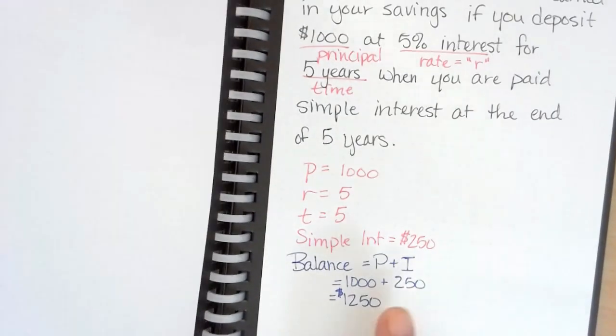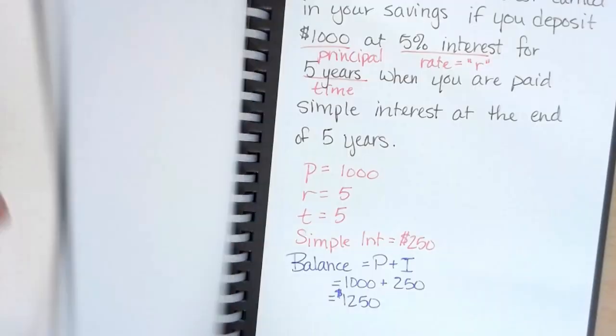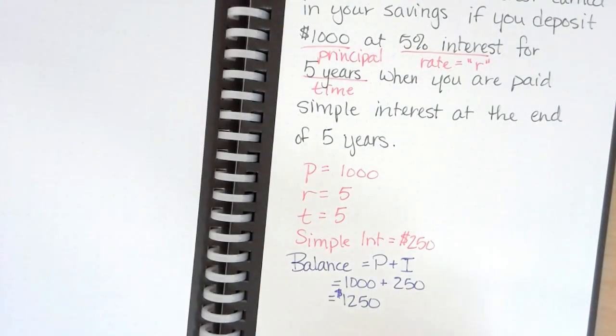So again, if you're wanting to retire rich, go with compound interest. If you want to pay lower payments, go with simple interest.